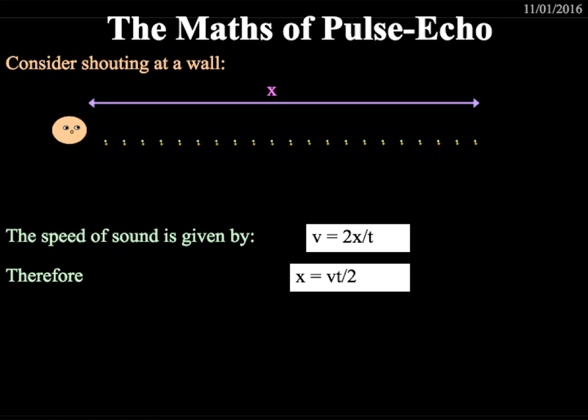In order to look at pulse echo in more detail, we can look at the following. If we were to shout at a wall, we will see that the sound will travel, it will hit the wall and it will travel back. So we end up with a distance of 2x. Therefore, the speed of sound is given by v, which is the wave speed, equals 2x divided by t, time. V for wave speed, x for distance and t for time. Therefore, we can rearrange this equation to x equals wave speed times time divided by 2. This is the same equation that we looked at previously. However, we are now using v for wave speed and x for distance. You can use either of these equations in the exam. However, please be aware that in the exam paper, they can ask you a question using either of them in the wording.